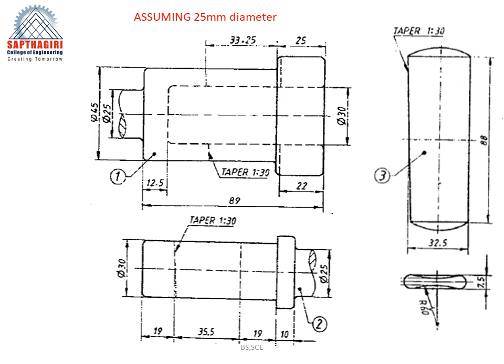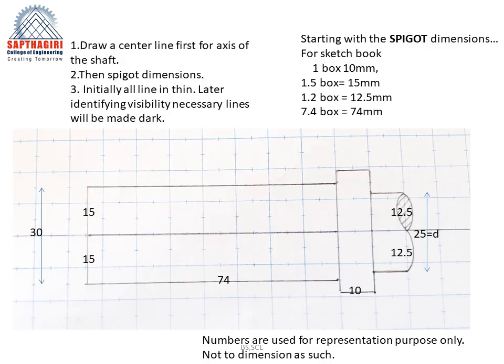Assuming a diameter of 25 mm, let us distribute the three parts — 1, 2, and 3 — separately and identify the dimensions. These are the dimensions obtained for 25 mm diameter. The spigot has a very simple representation. Starting from an axis line, we represent the spigot first. In our sketchbook, one box is 10 mm, so 1.5 boxes equals 15 mm. For the spigot, diameter 25 gives 12.5 on each side, with length 74 to approximately 75 mm and 10 mm at one end.